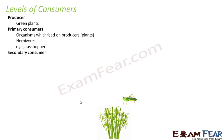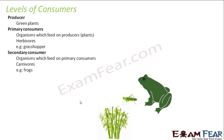The next is the secondary consumer — the organism which feeds on the primary consumer. These are carnivores because carnivores feed on the herbivores. Here we can take the example of the frog. The frog feeds on the grasshopper, so the frog becomes a secondary consumer.